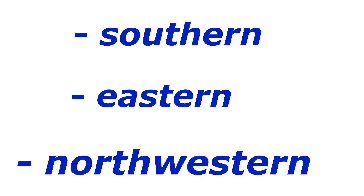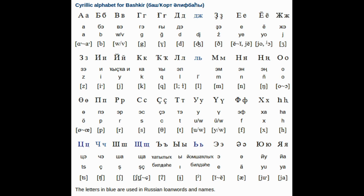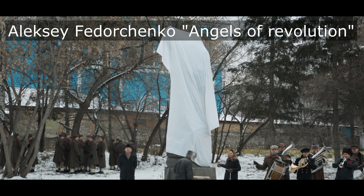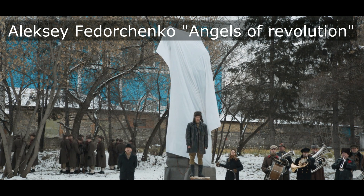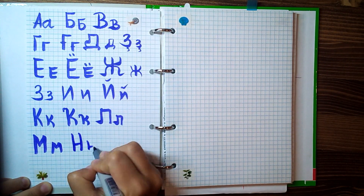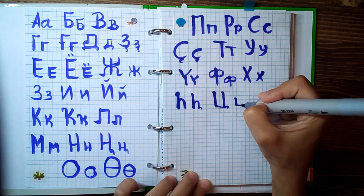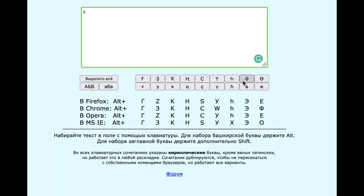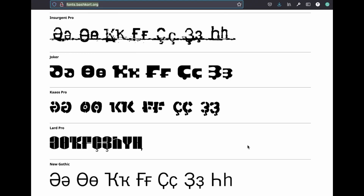Bashkir even has three dialect groups — Southern, Eastern, and Northwestern. Take a look at the alphabet. You can find the PDF with it below the video. Bashkir had a written variant of the Arabic script from about the 10th century until 1923, when after the revolution the Soviet government started replacing and adapting local cultures and languages. So after 1923 until nowadays, they use Cyrillic letters with some special added ones. And if you'd like to chat and type in Bashkir, you'll need a special keyboard and fonts.